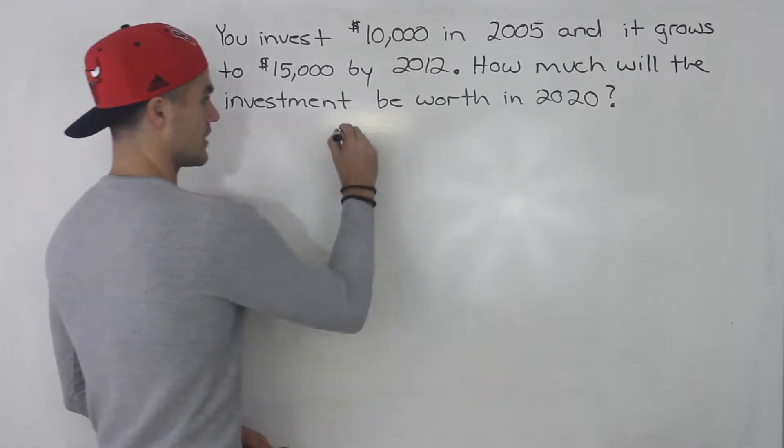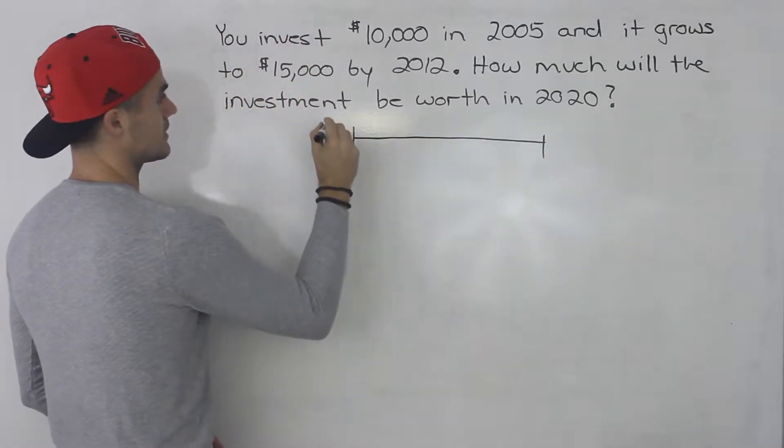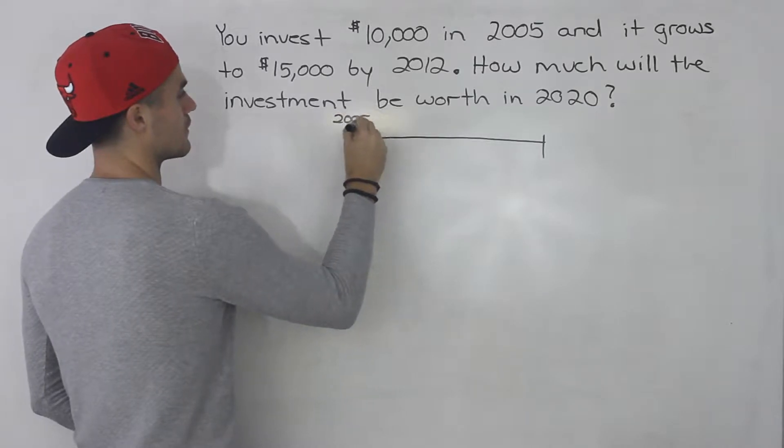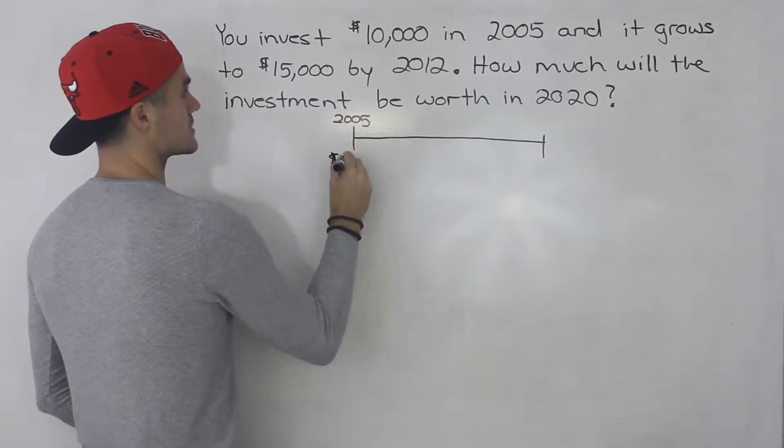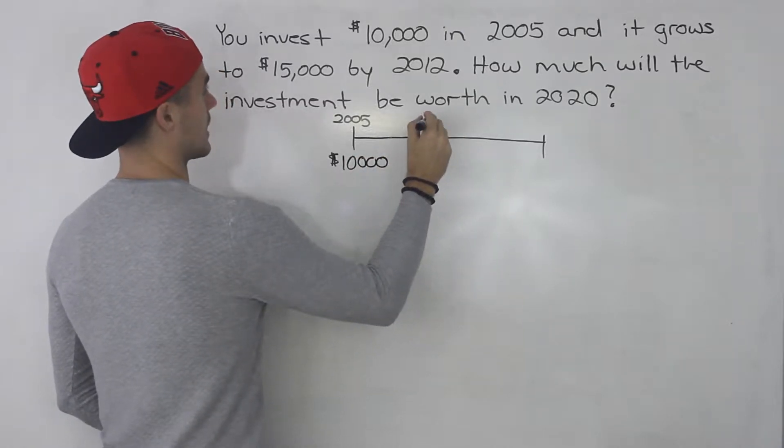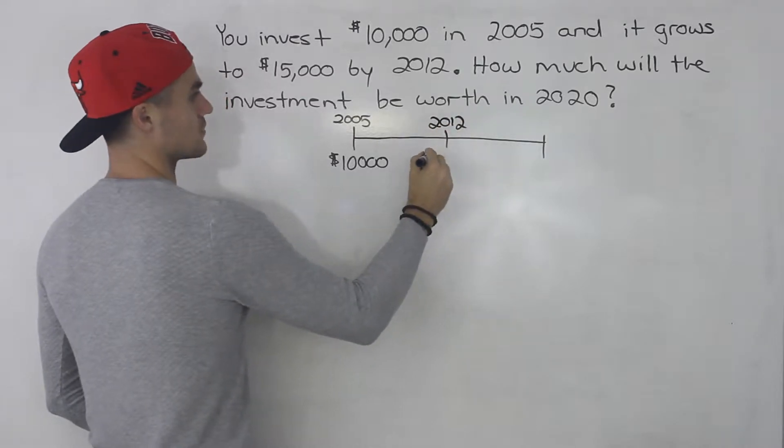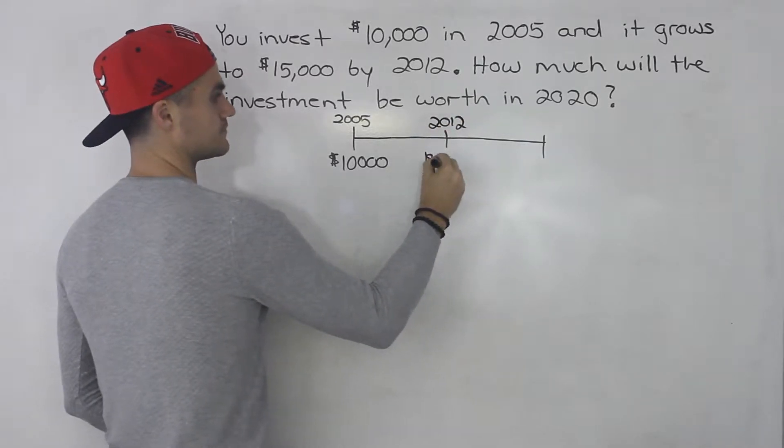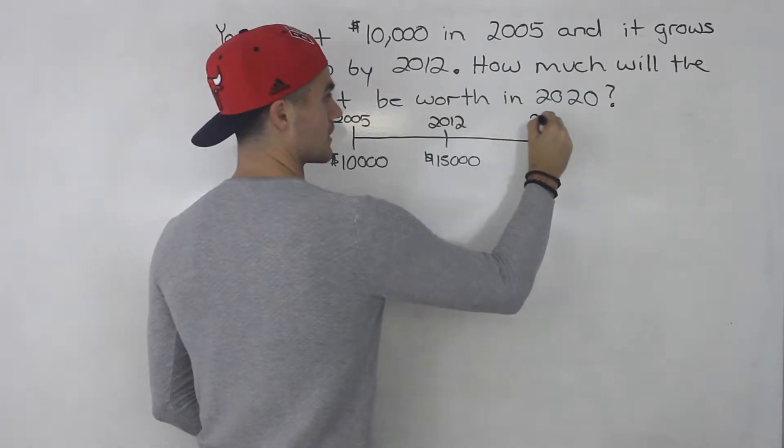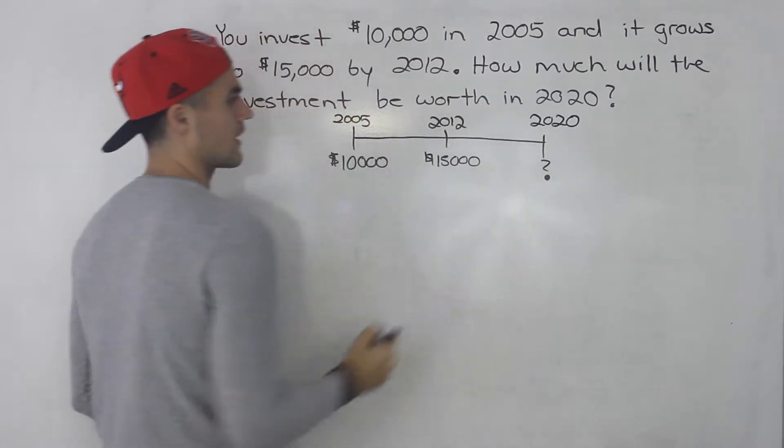So let's draw a timeline of what's going on here. Here we are in 2005 investing $10,000, by 2012 it grows to $15,000, and the question is asking how much are you going to have in 2020? We're looking for that amount here.